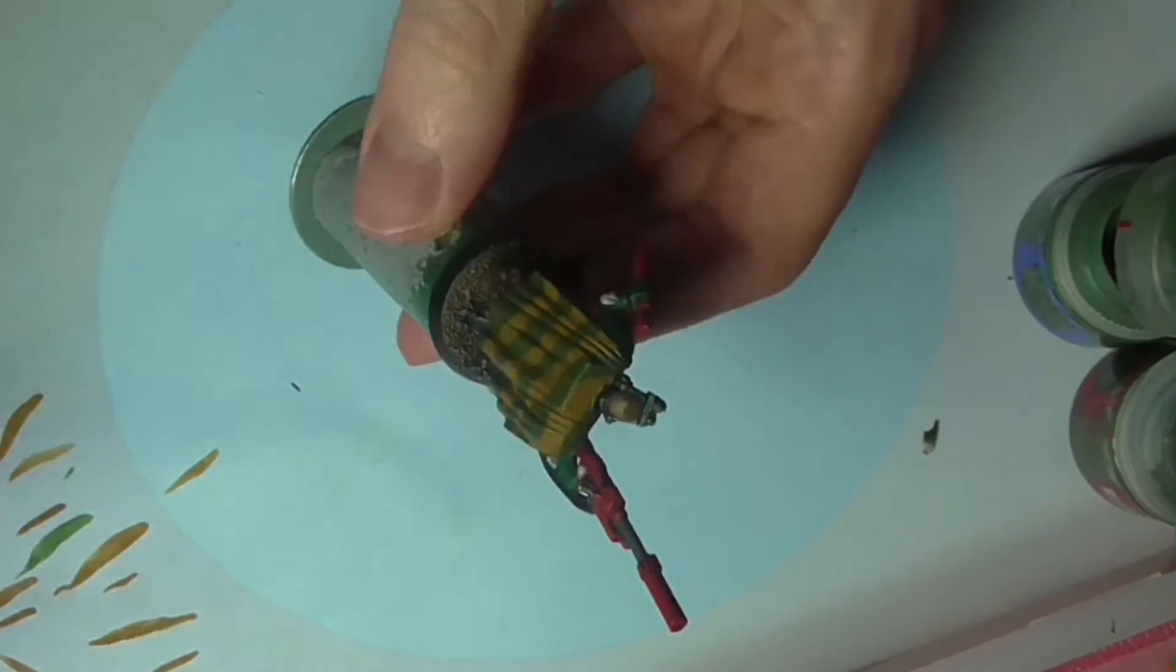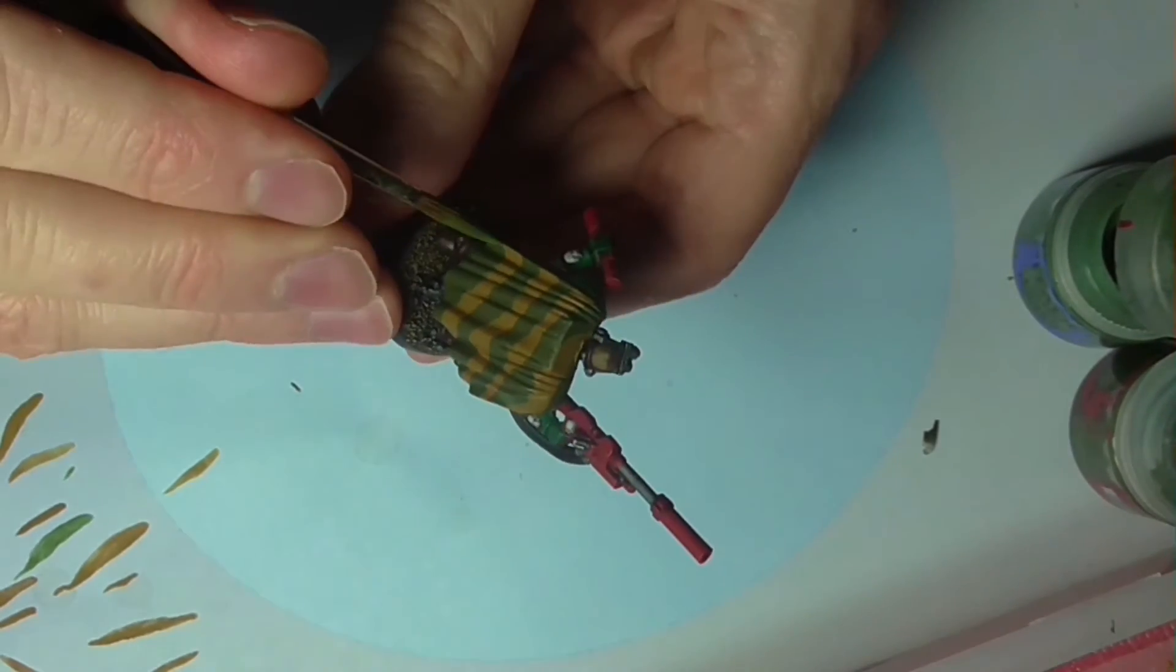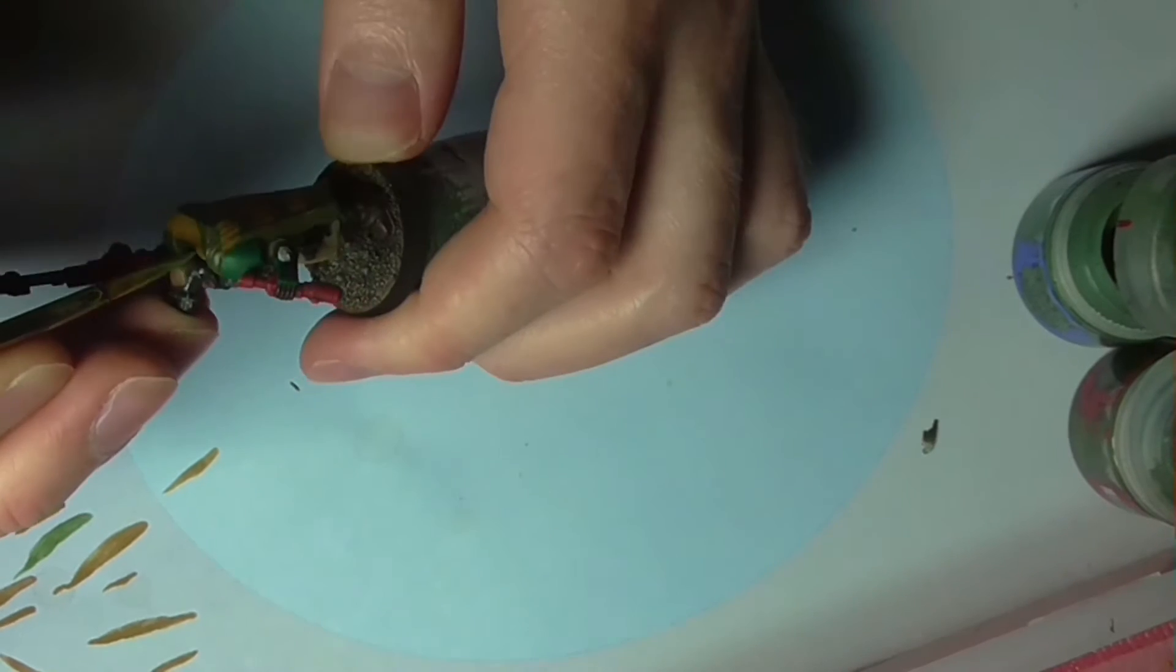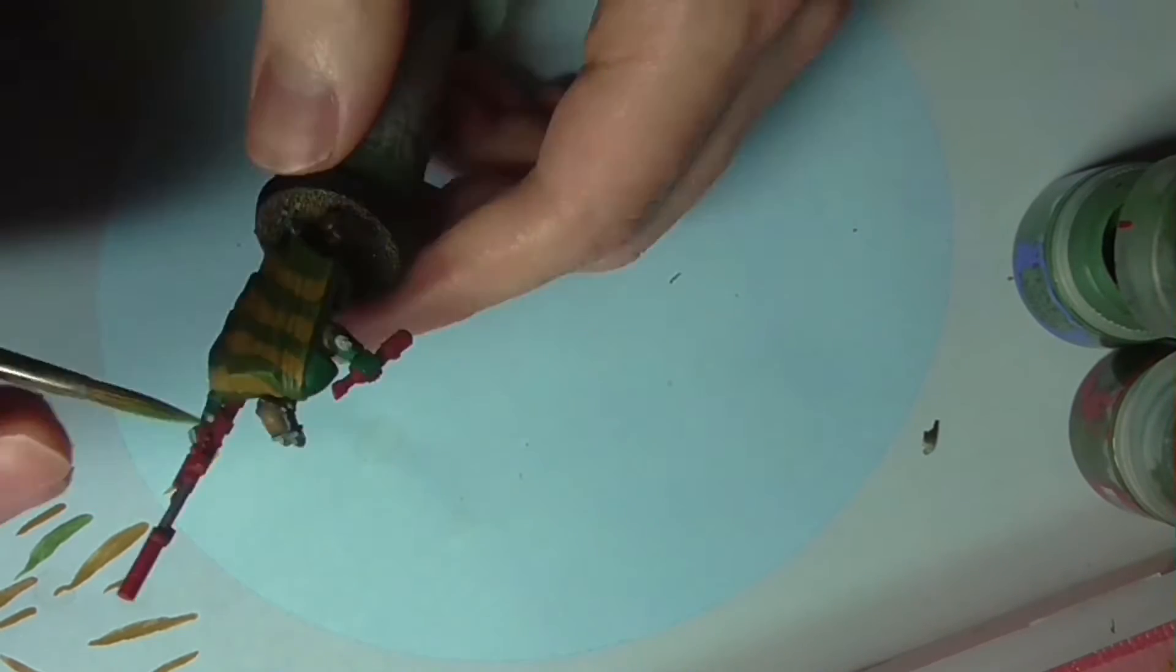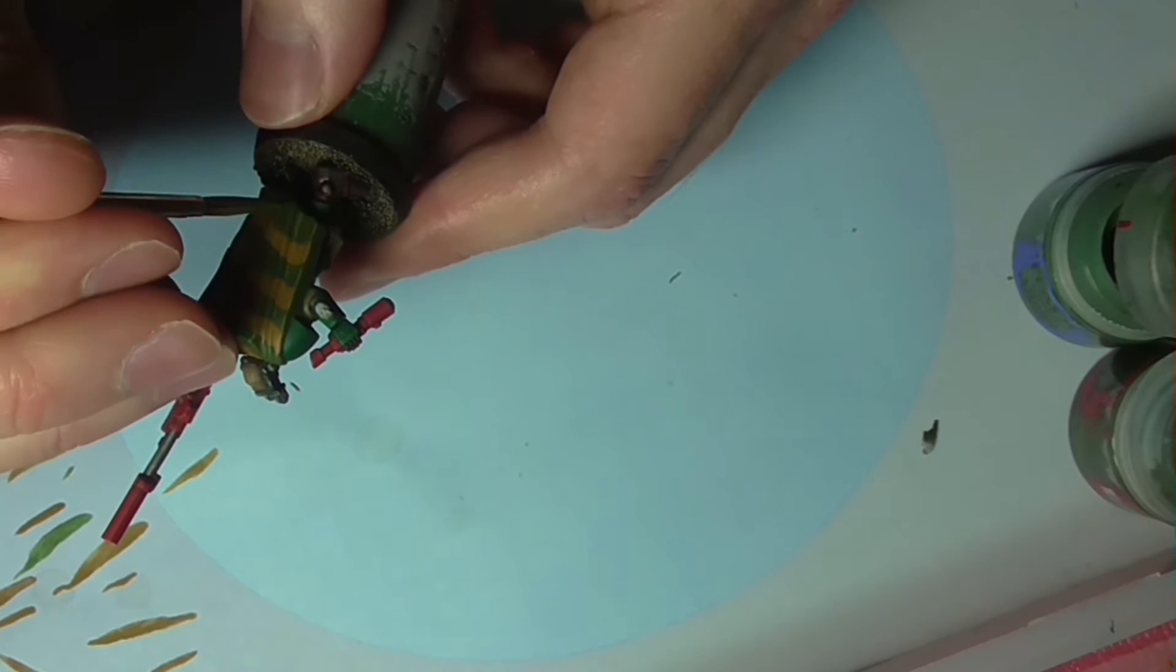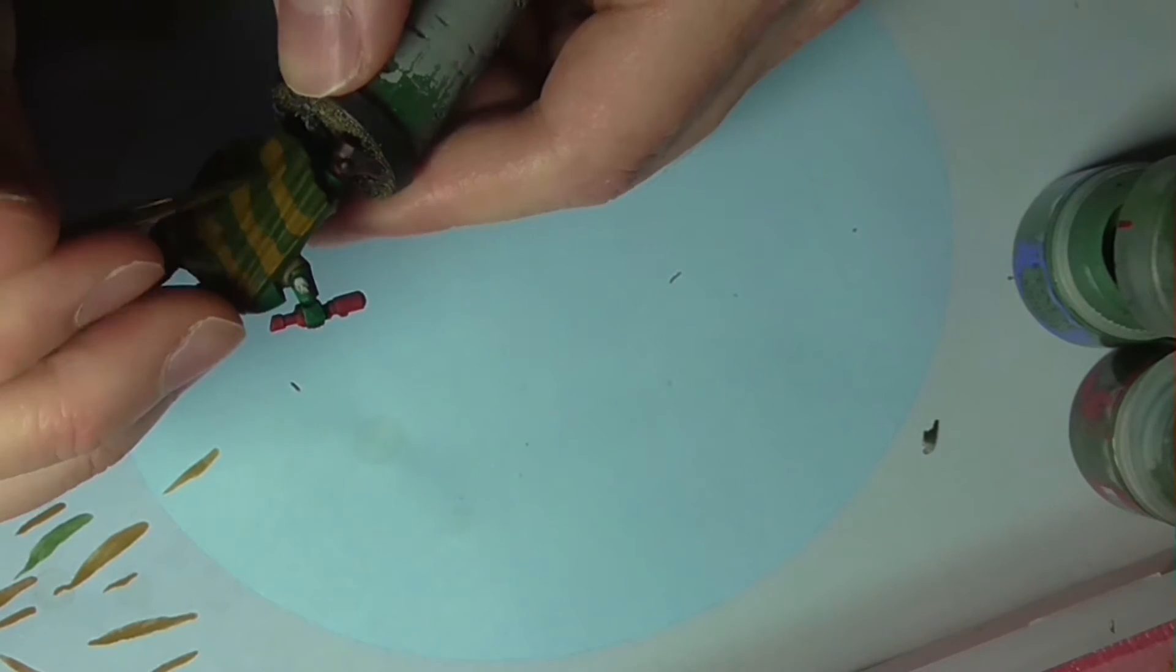And once that's done, get some Loren Forest on your palette and highlight the green folds of the cape that color. Once you're done, you should have your base highlights in place.